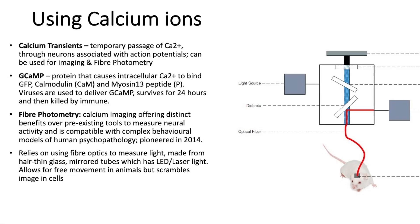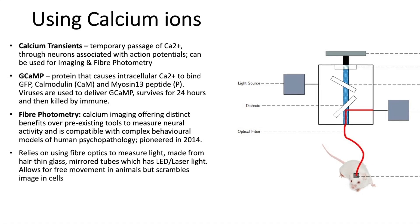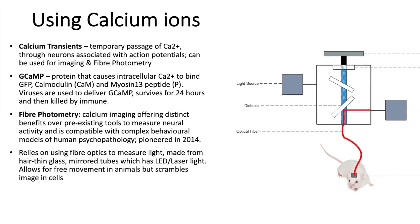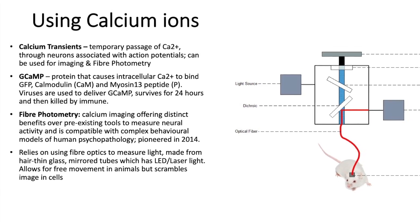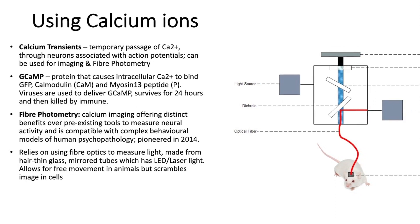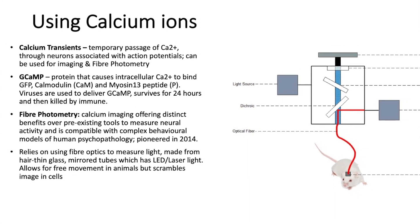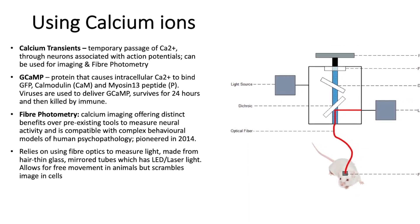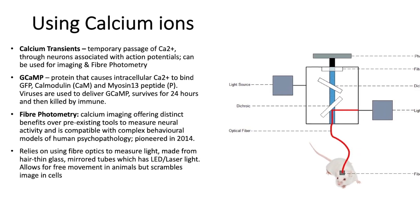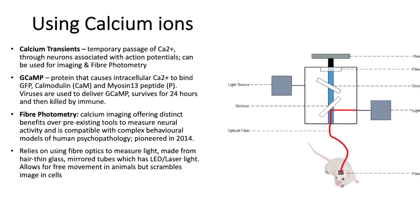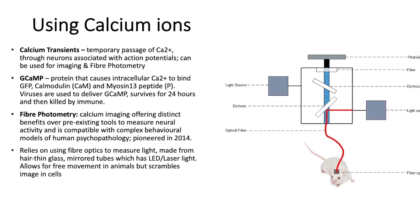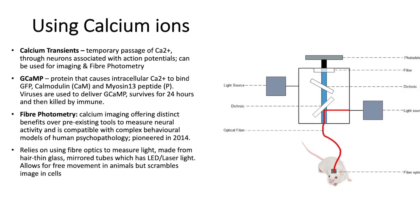Calcium transients are temporary passages of calcium through neurons associated with action potentials. They can be used for imaging and fiber photometry. They involve proteins that cause intracellular calcium to bind to green fluorescent proteins, as well as calmodulin and myosin. Viruses are used to deliver GCaMP, and it survives for 24 hours before being killed by the immune system.